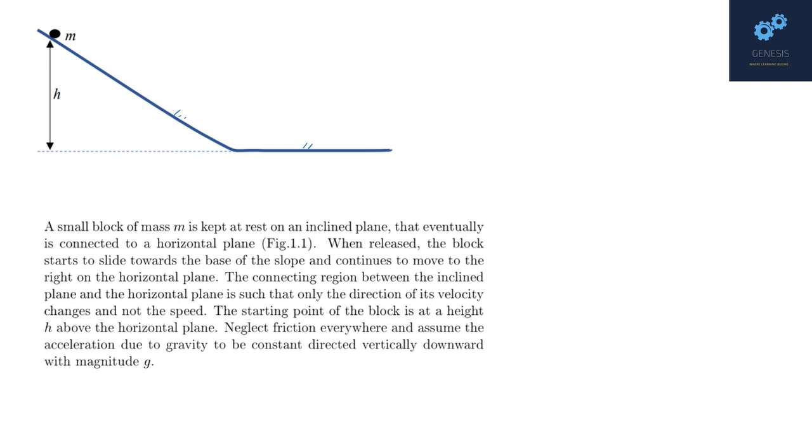The connecting region between the inclined plane and horizontal plane is such that only the direction of its velocity changes and not its speed, so maybe a curve like this. The starting point of the block is at height h above the horizontal plane. Neglect friction everywhere and assume the acceleration due to gravity to be constant, directed vertically downward with magnitude g.